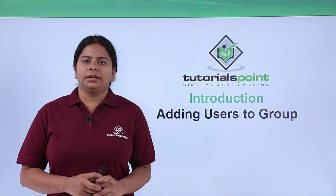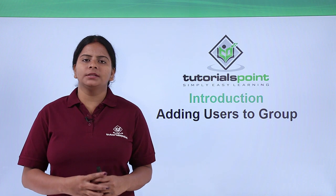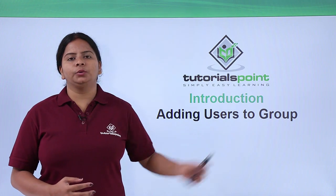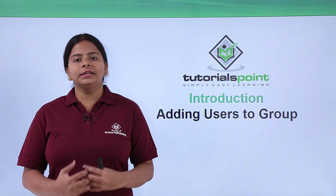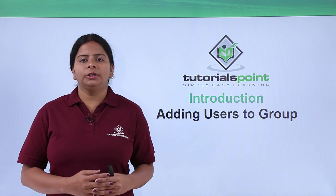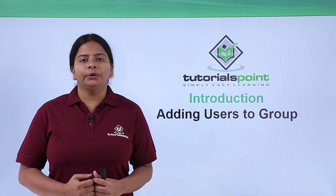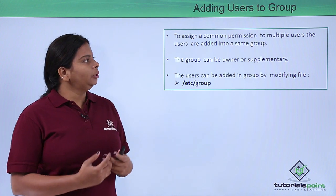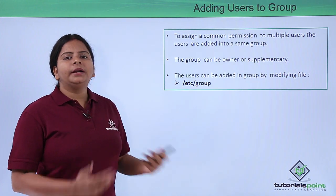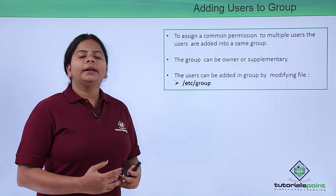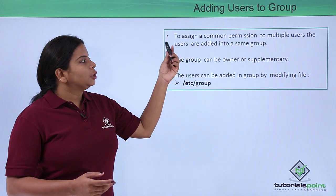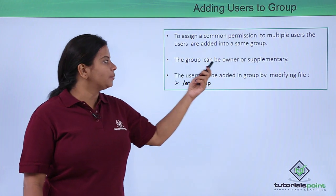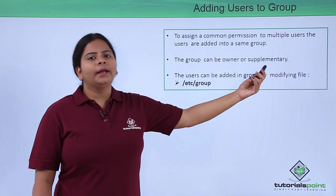So till now we have created users and groups, we have modified the users and groups entries, and we have seen how we can set the password age. Now I'm going to show you how we can add a user to a group. When a user is created, it automatically gets an owner group. We can add multiple users into the same group, or add a user into multiple groups, to assign common permissions. Groups can be an owner group or a supplementary group.